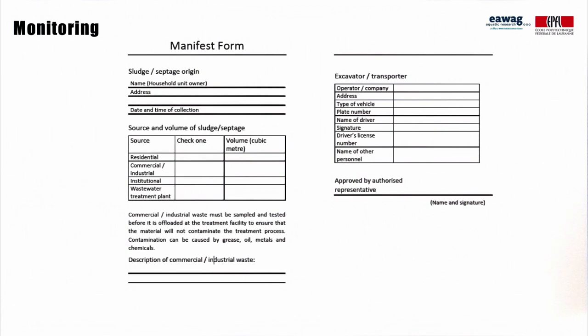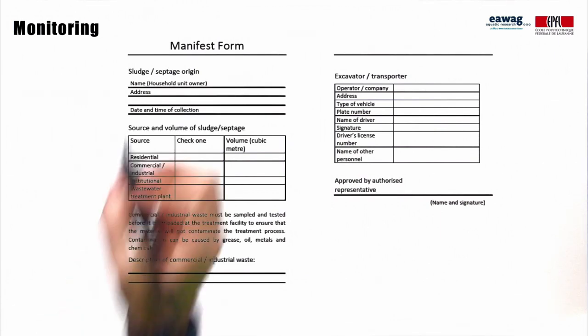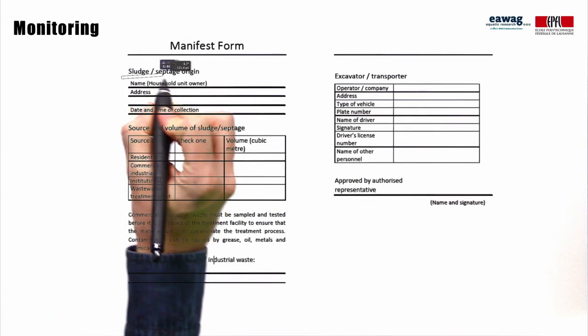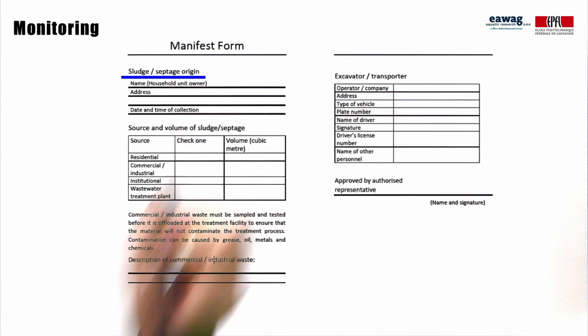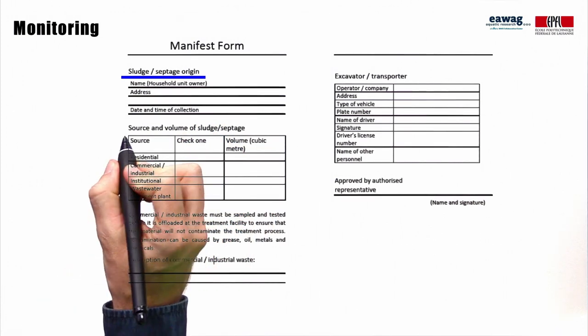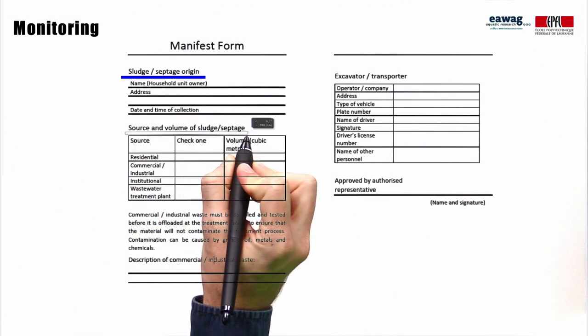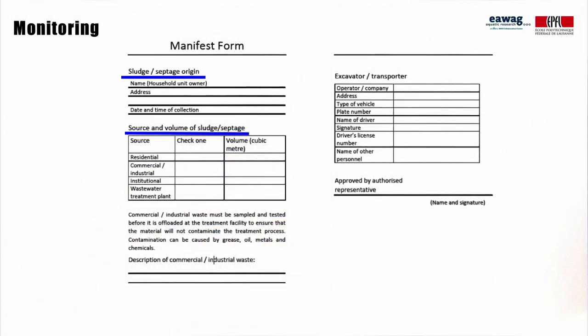The manifest form has to be filled out during the collection of fecal sludge by the service provider. It includes the name and other details of the client and also the type of on-site sanitation technology from which the sludge is being collected.